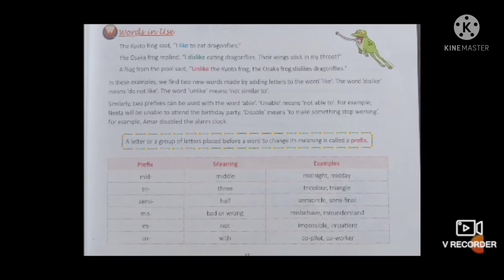If we add 'dis' before 'able,' it becomes 'disable.' It means to make something stop working - kuch kaam karna band ho jaana. For example, Amr disabled the alarm clock - Amr ne alarm clock band kar di. So here is the definition of a prefix: a letter or a group of letters placed before a word to change its meaning is called a prefix. Iska matlab hai ki kisi word ke aage un, dis ya aisa koi prefix laga diya jaye to us word ka meaning change ho jaata hai.